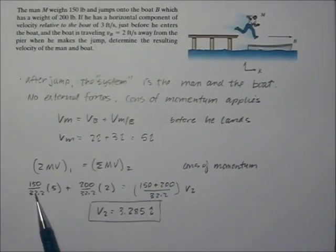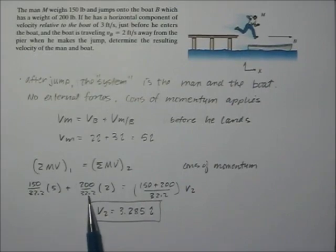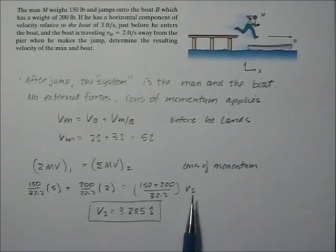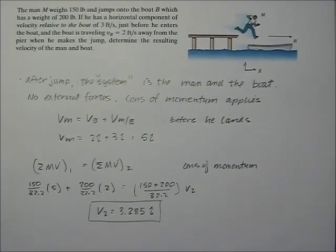Conservation of momentum applies: the sum of the beginning momentums equals the sum of the ending momentums. His beginning momentum is his mass times five feet per second. The boat's beginning momentum is its mass times two feet per second. At the end, they're joined together with a common velocity, so we sum the masses together. Solving, we find they go 3.285 feet per second in the i direction after joining together.